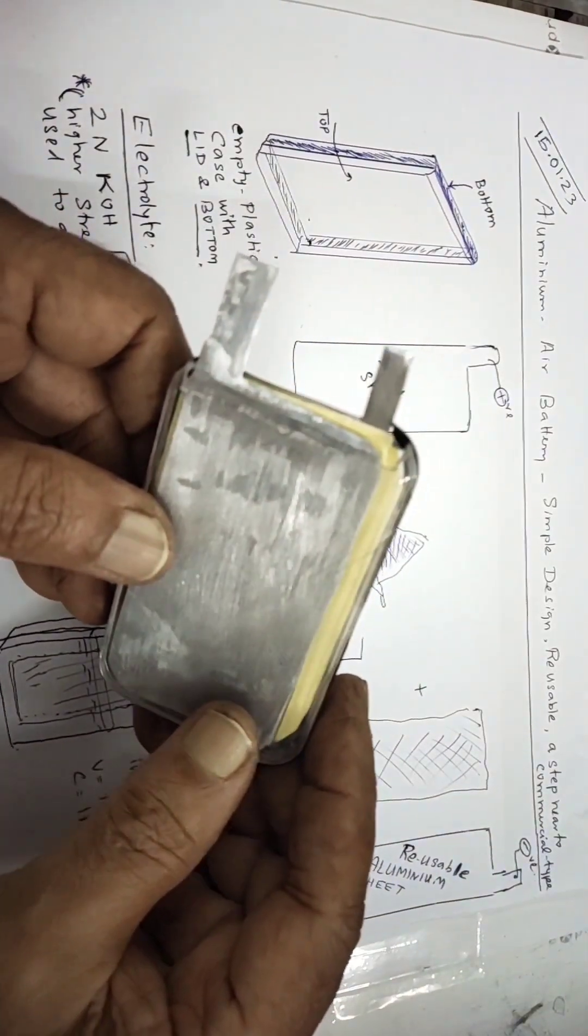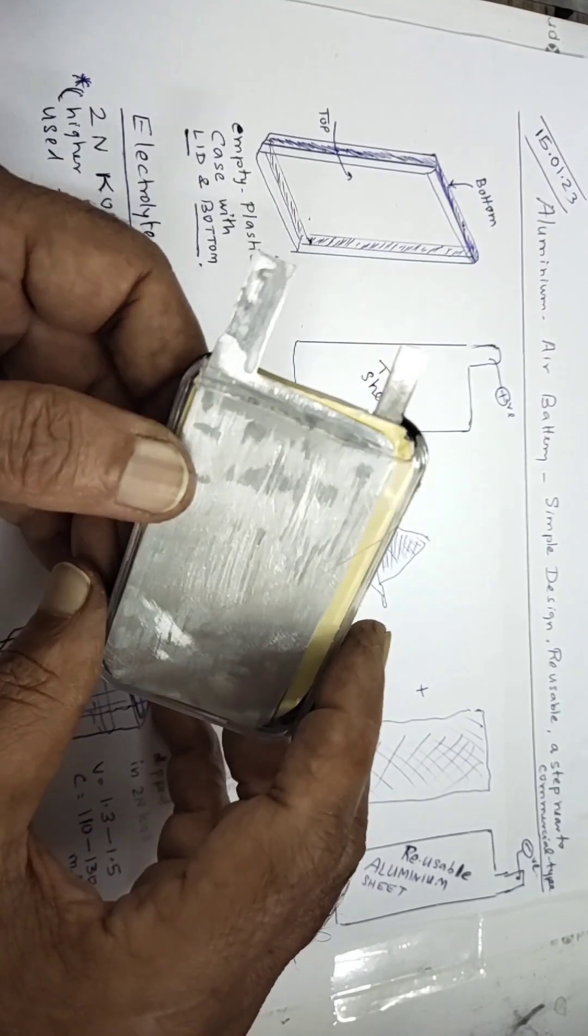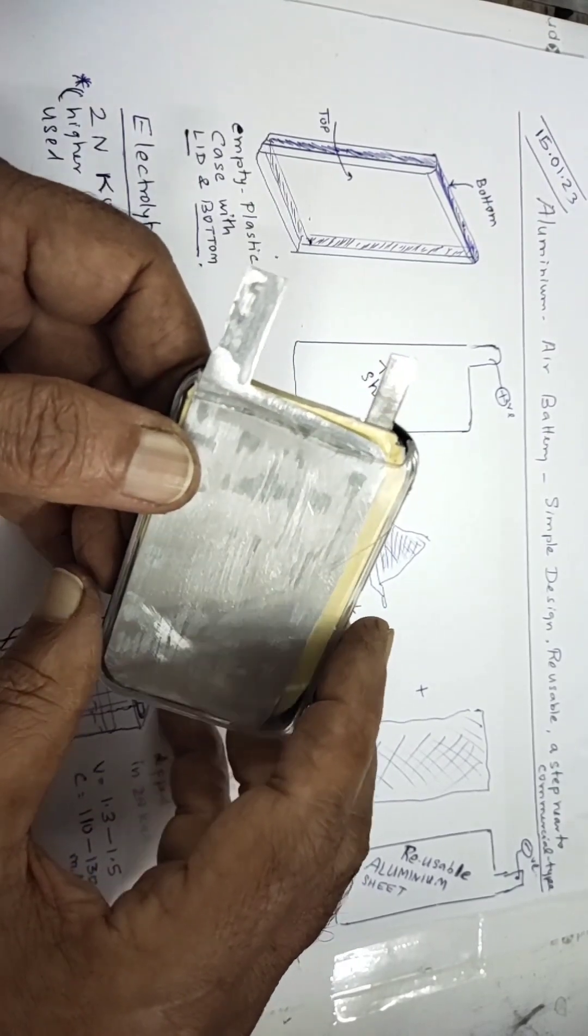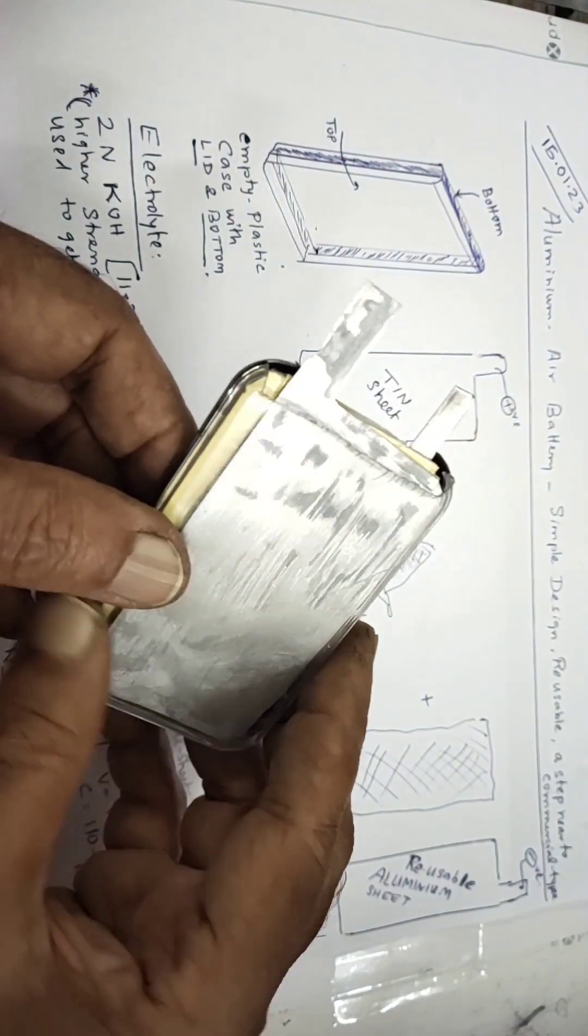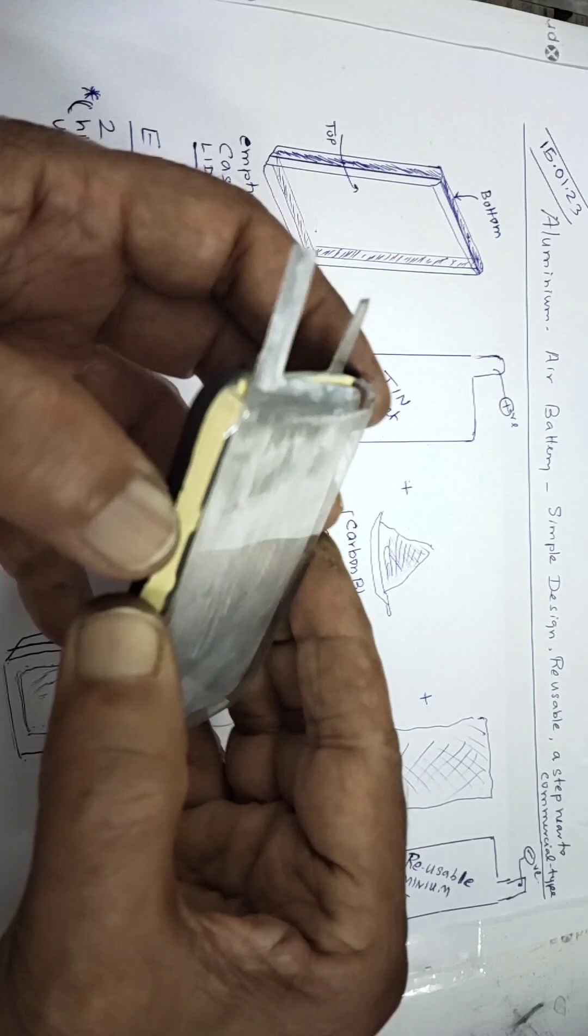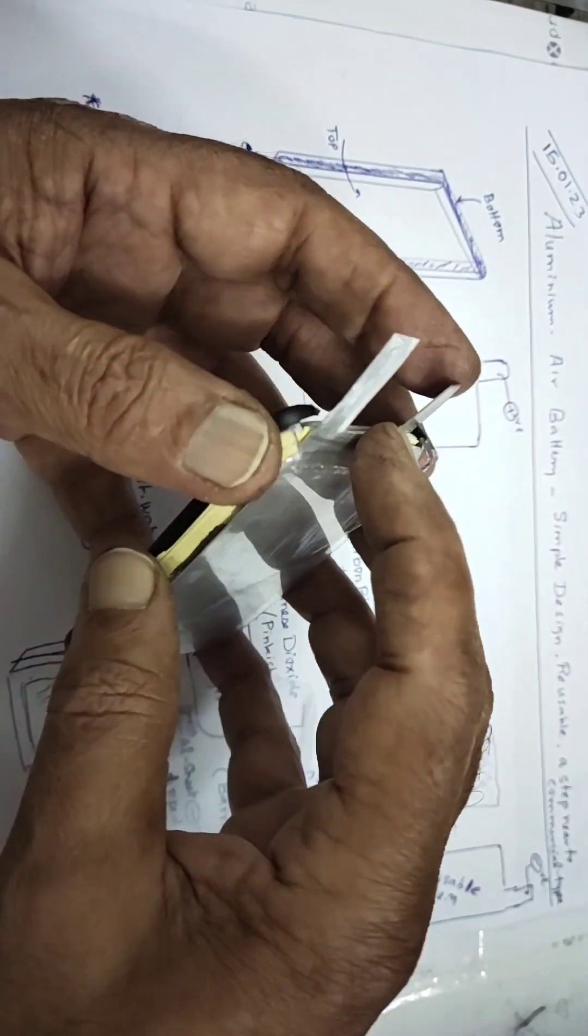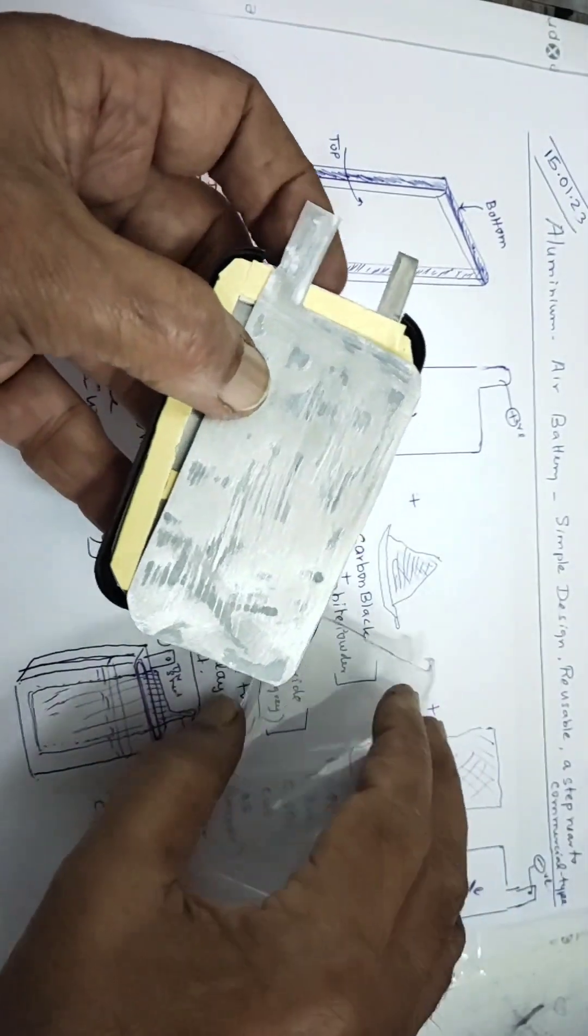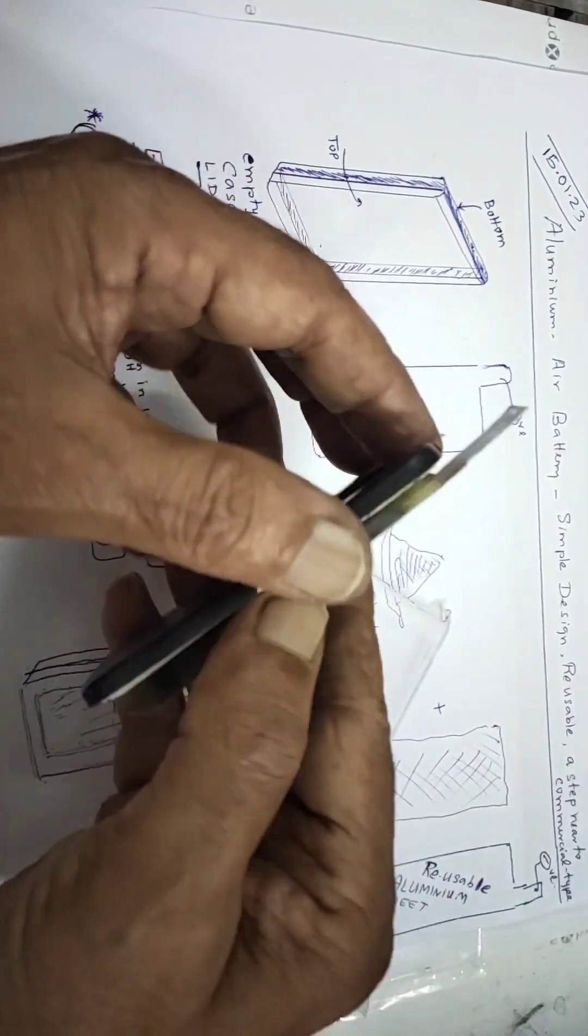Friends, today let us see how to prepare an aluminum air battery. It is a simple type, a reusable step towards the commercial type. You can take any empty plastic case with lid and bottom like this. I got a chiclet box - this will be the top and this is the bottom.